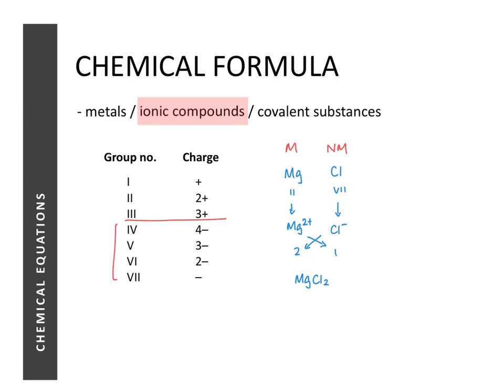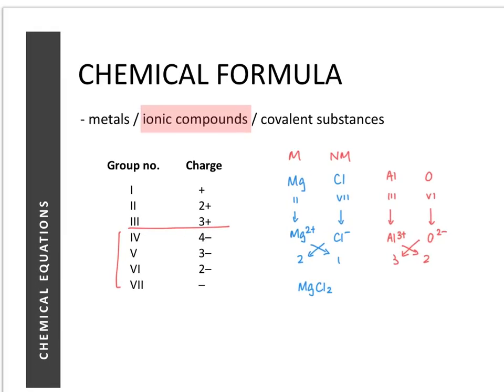Let's try another example with aluminum and oxygen. Aluminum is in group 3, so it forms Al³⁺; oxygen is in group 6, so it forms O²⁻. Cross-multiplying the charges — 3 and 2 — gives us the formula Al₂O₃.